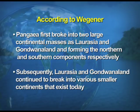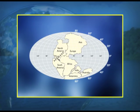Subsequently, Laurasia and Gondwana land continued to break into various smaller continents that exist today. You can have a look at this map to see how Pangaea began to break.